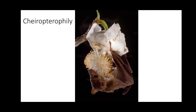Another unique agent is bats, and so this method is called chiropterophily. The plant used as an example here is the African baobab, scientifically known as Adansonia. This plant produces a large abundance of flowers from which bats come to collect nectar. In doing so, the stigma captures all the pollen from the bat and gets fertilized. The specific flower modifications that facilitate this process will be discussed in a later video, including a cross-section of the flower.